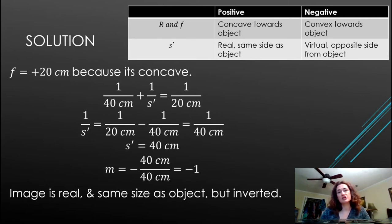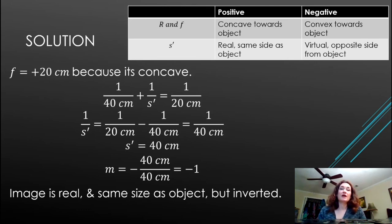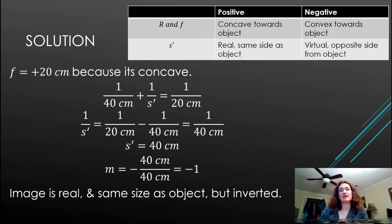A positive s′ means the image is a real image — it's on the same side as the object. The magnification is m = −40/40 = −1. The negative sign means the image is inverted. The magnitude of 1 means the image is the same size as the object. So the image is real, inverted, and the same size as the object.